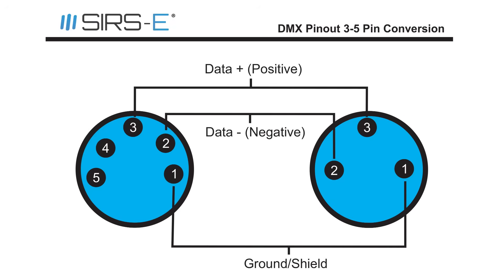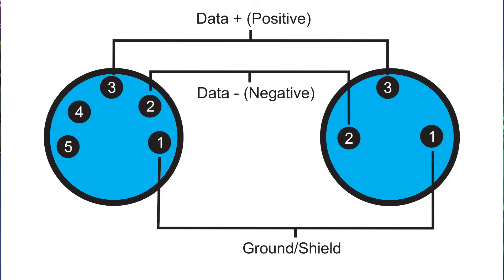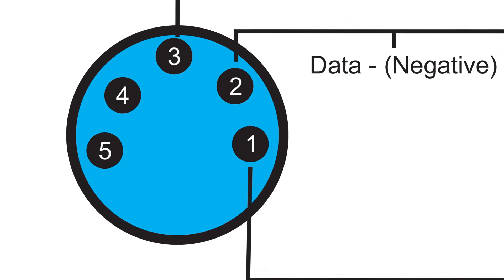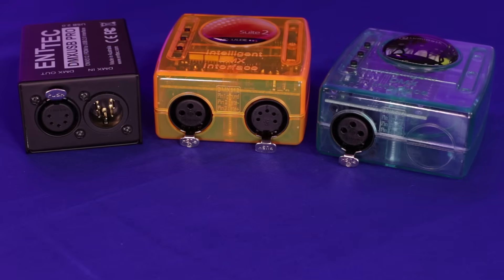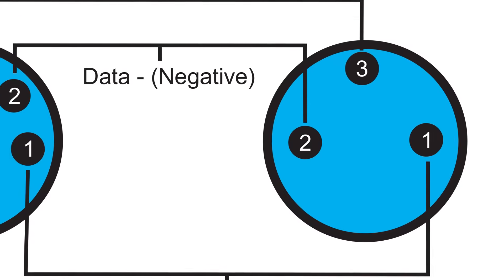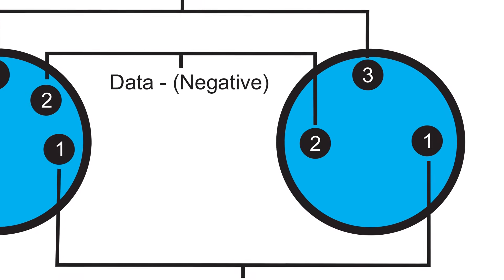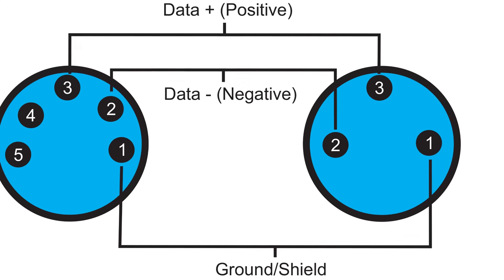DMX 5-pin has 5 pins obviously, and pins 4 and 5 are usually used for secondary data or other things that different companies may find use for. But nowadays most companies just use pins 1, 2 and 3. Pin 1 is usually the ground, 2 is data negative, and pin 3 is data positive.